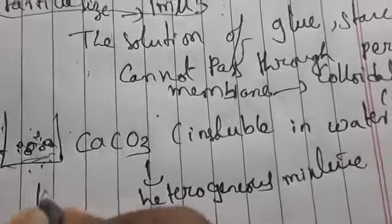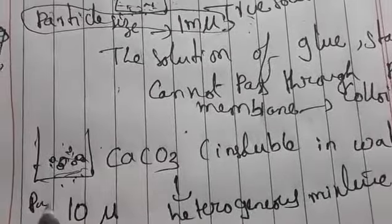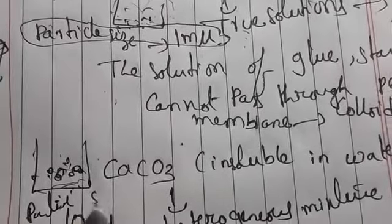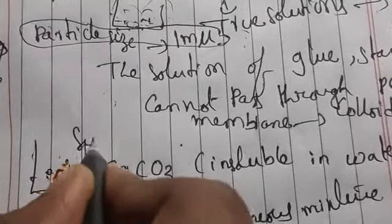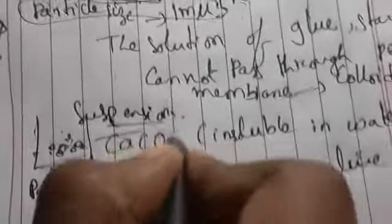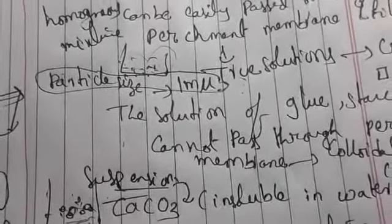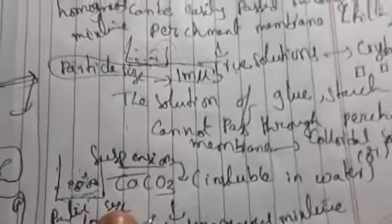Mixtures visible to the naked eye we call suspension solutions. The particle size for suspension solutions is about 10 micro milli units. With an ordinary filter paper we can easily filter this type of compound.